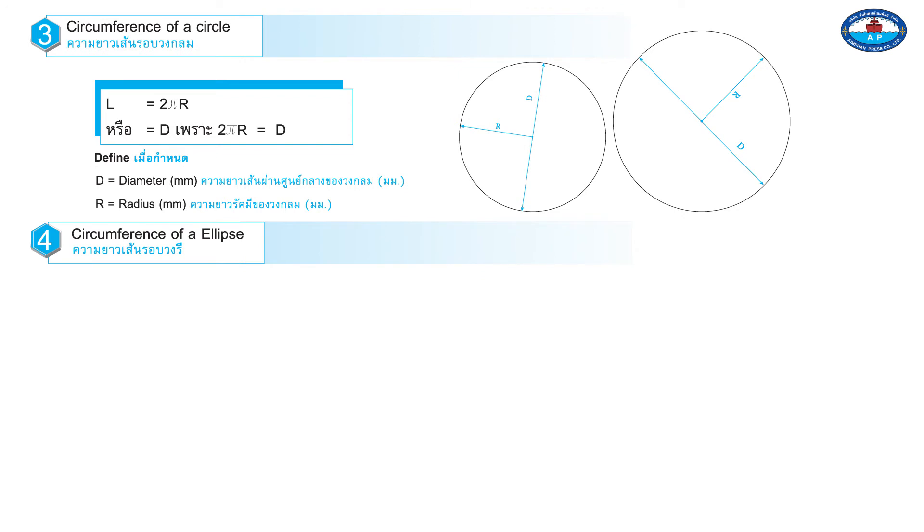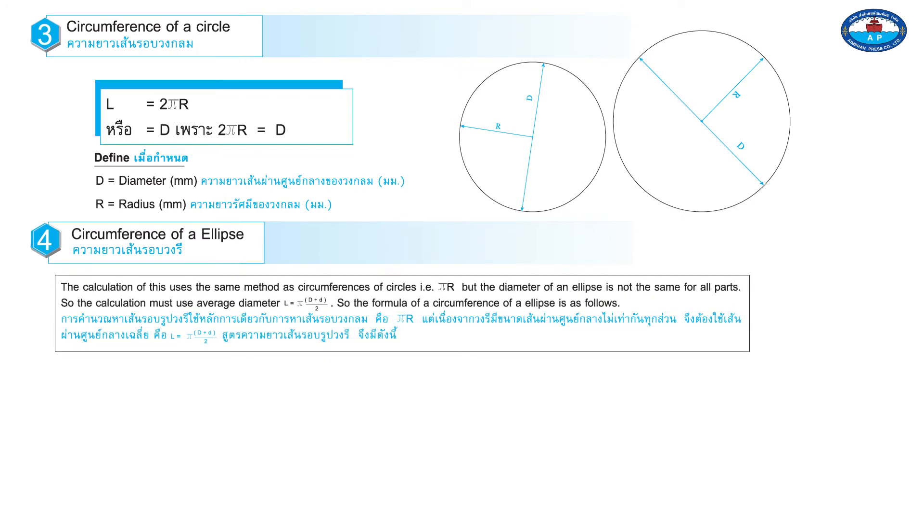4. Circumference of an Ellipse. The calculation of this uses the same method as the circumferences of circles, i.e. pi r. But the diameter of an ellipse is not the same for all parts.